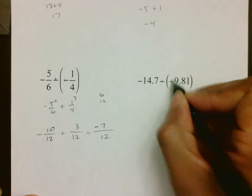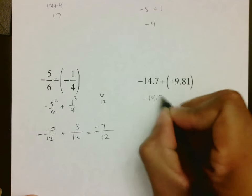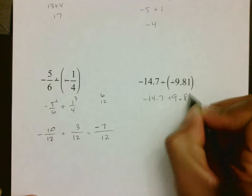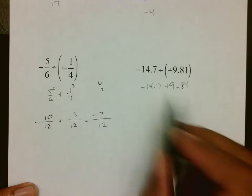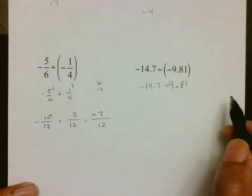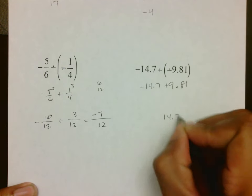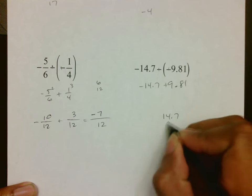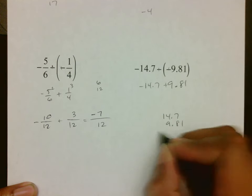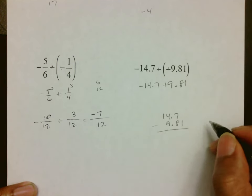Same thing here, double negative, so we end up with negative 14.7 plus 9.81. I'm going to do this the long way just to make sure you know that we can still do that. Because these are different, we're going to subtract, and remember it's always the bigger one first, so 14.7 minus 9.81. Remember you want to line up the decimals on that whenever we do it.